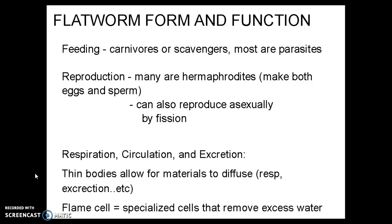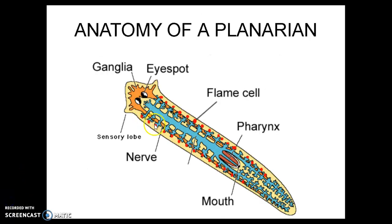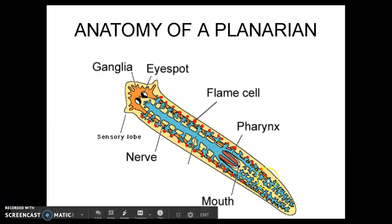They have thin bodies that allow for materials to diffuse through for respiration, excretion, and circulation. They also have structures along their sides called flame cells. These are specialized cells that help remove excess water because they live in aquatic environments. These are the locations of the different flame cells on the sides of the planaria.